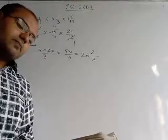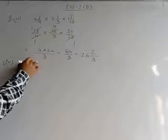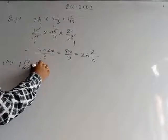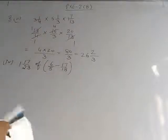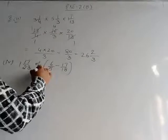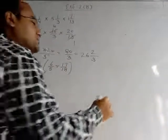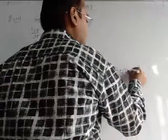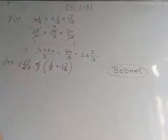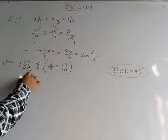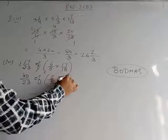Now part number 4. The question is: 1 whole 17/23 of (6/5 minus 17/18). In this question we have bracket, off, and subtraction — so we have to follow BODMAS. First we convert the mixed fraction: 23×1=23, 23+17=40, so it becomes 40/23 of (6/5 minus 17/18).